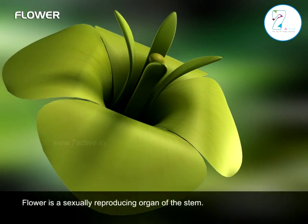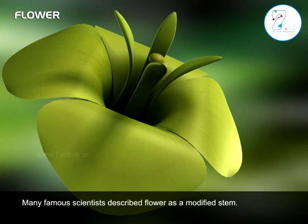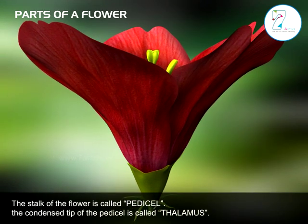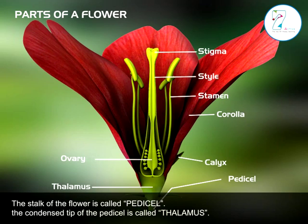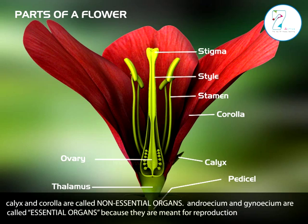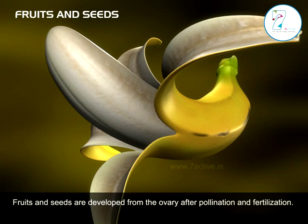Flower is a sexually reproducing organ of the plant. It develops from either an axillary bud or from the terminal bud. Many scientists describe a flower as a modified stem. The stalk of the flower is called the pedicel. The condensed tip of the pedicel is called the thalamus. Thalamus bears floral organs like calyx, corolla, androecium, and gynoecium. Calyx and corolla are called non-essential organs, while androecium and gynoecium are called essential organs because they are meant for reproduction.